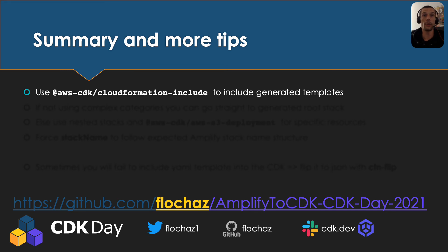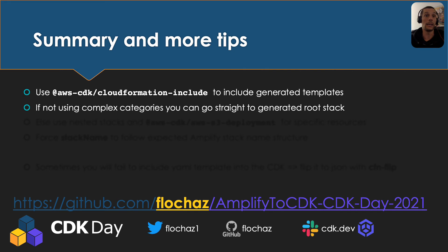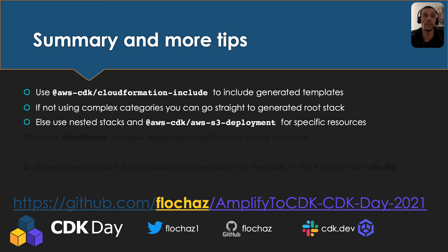First, leverage the CloudFormation Include construct to include your generated templates. If you're not using complex categories, you can go straight to the generated root stack. Otherwise, use the categories' nested stacks and leverage AWS S3 deployments to upload the specific resources of your categories, such as resolvers or handlers for functions.